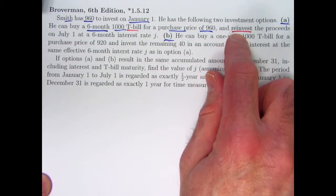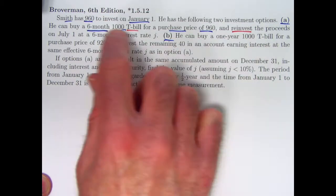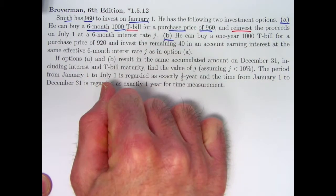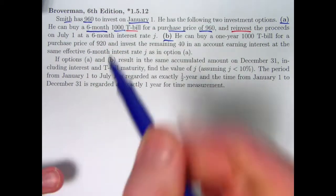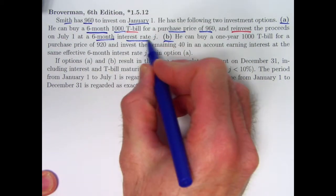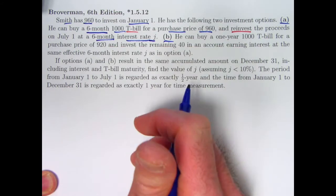Anyway Smith is going to reinvest that money, the thousand, after six months on July 1st in another six month investment that's got a six month interest rate of J and then have a certain amount at the end of the year.